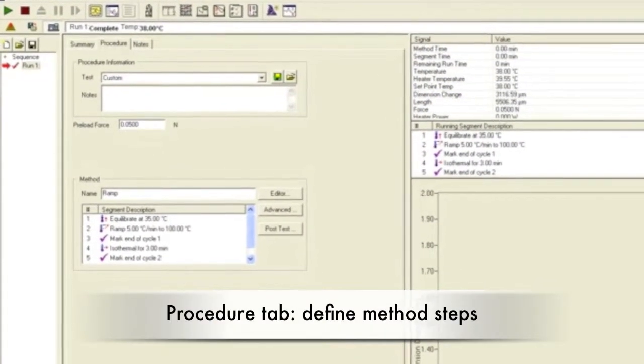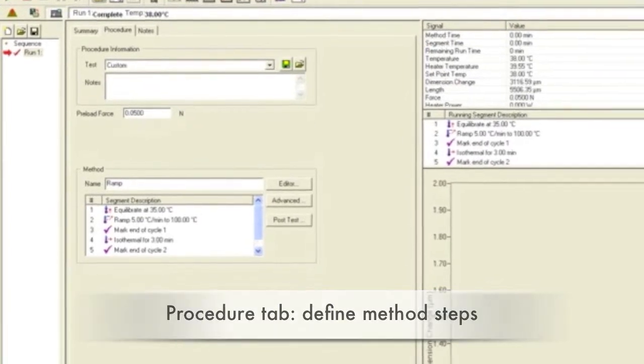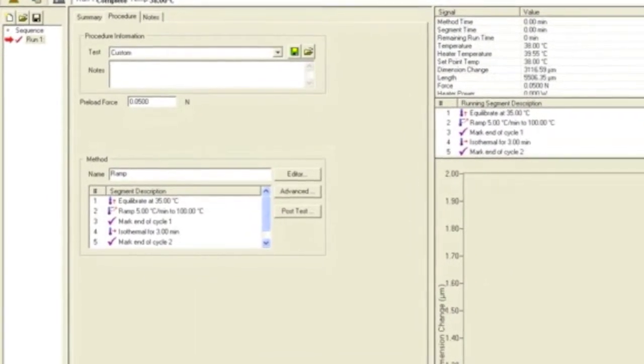In the Procedure tab, enter the desired load which is typically 0.02 to 0.05 N. Then add the steps for your method.